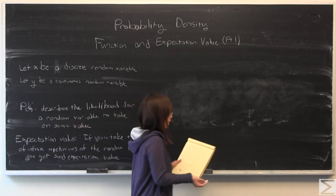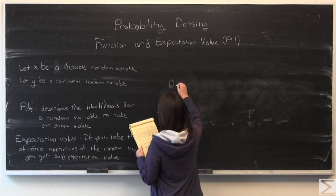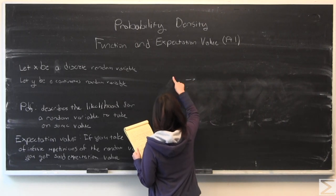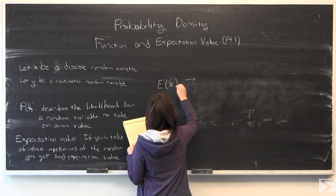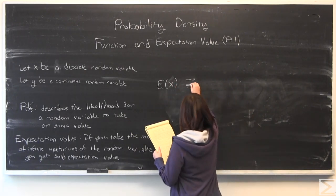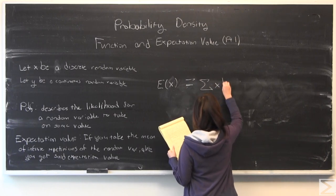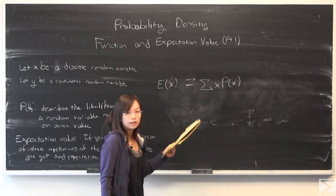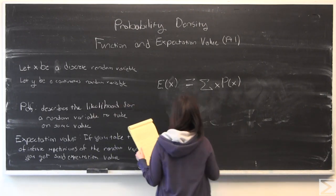The way you calculate that for the discrete case, the way we notate it is usually E of x for expectation value. You would multiply x for every probability available at the function, and you would sum that up, and then you would get an expectation value for your discrete case.